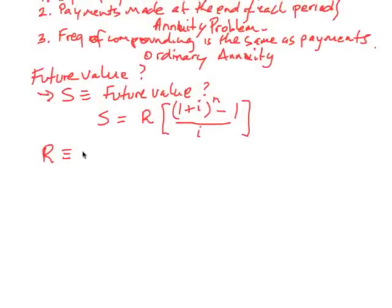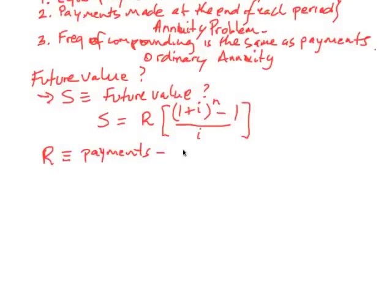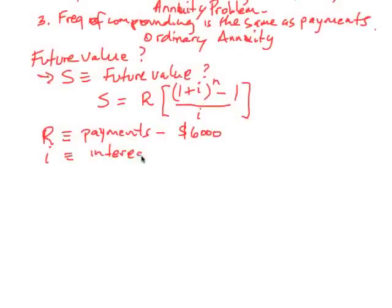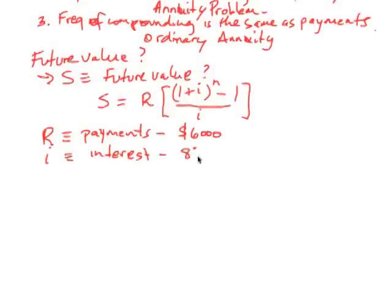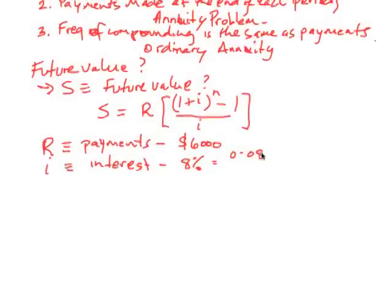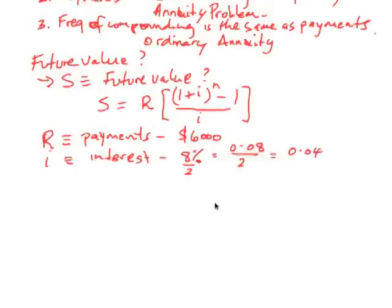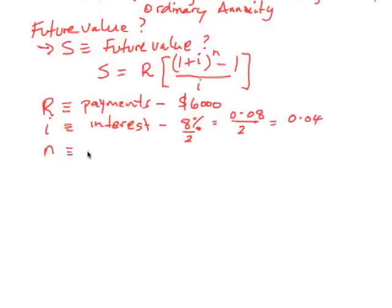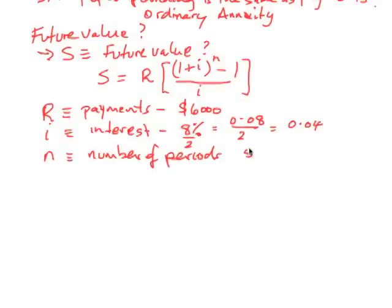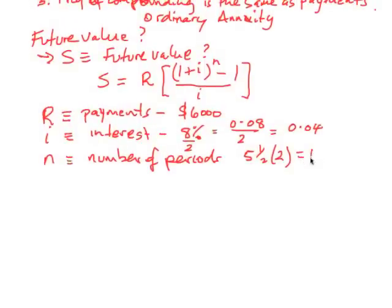Let's identify some of these things. We've done the future value already as S. So R is going to be equivalent to the payments, which in this case is $6,000. Next, i is going to be the interest. In this case, the interest is 8%. But we need to be careful because this is calculated semiannually, so twice a year. So this is actually 0.08 over 2, which of course is 0.04. And finally, n is the number of periods. Now we're doing this for five and a half years, and we're doing it twice a year, semiannually, which will be 11 periods.